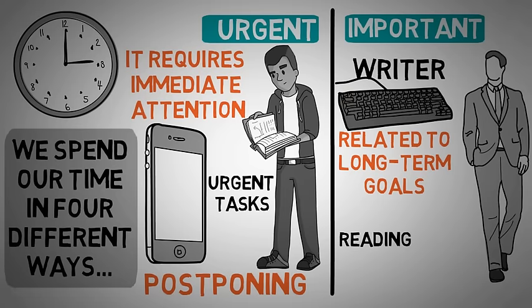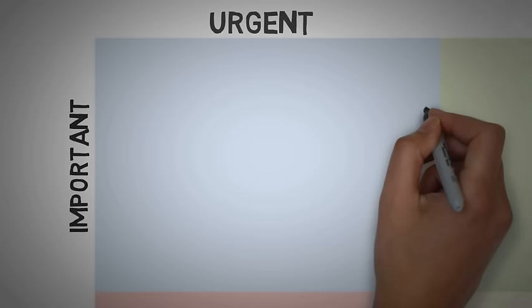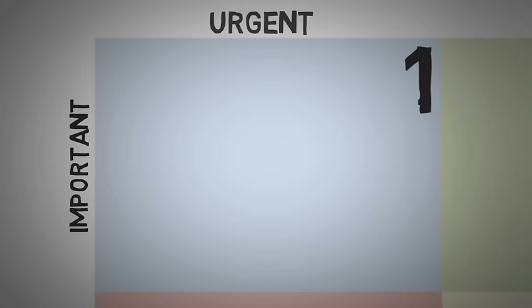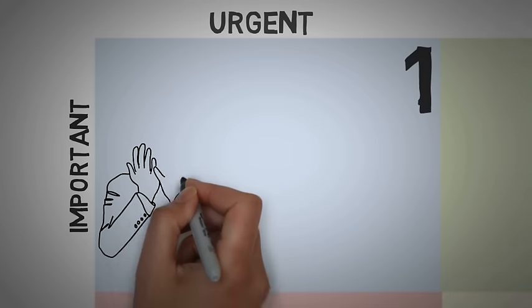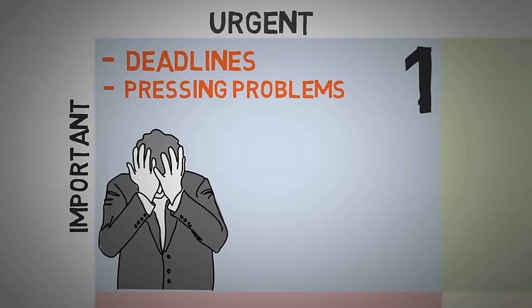Quadrant one includes both urgent and important goals. A life focused on this quadrant is usually full of stress, since the deadlines and pressing problems always keep coming. In this quadrant, the things to do are very urgent and also important.